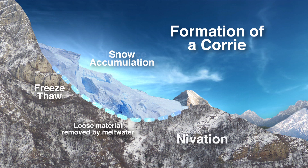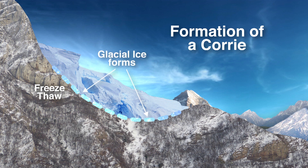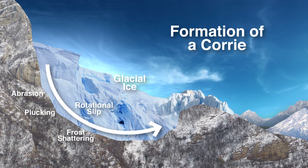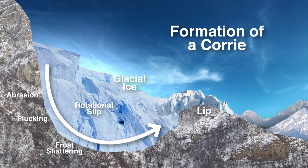As the hollow became deeper, glacial ice would have begun to form, speeding up the process of erosion still further. Abrasion and plucking, especially at the back of the corrie wall, would have combined with frost-shattering to remove more material, deepening the hollow. Erosion was even more effective thanks to the rotational movement of the ice, scouring the base and back wall of the corrie, deepening it further, wearing it back into the mountain and creating a lip at the front.